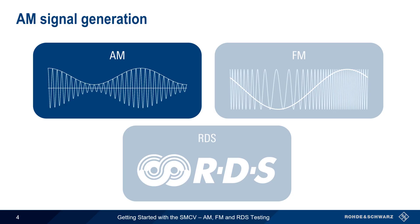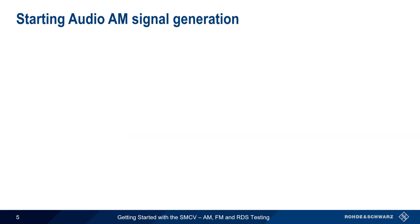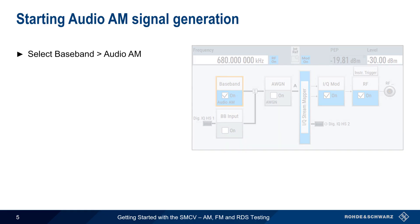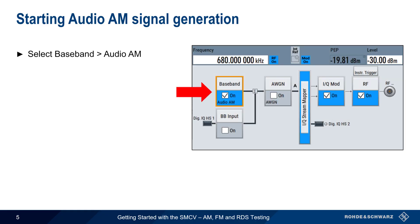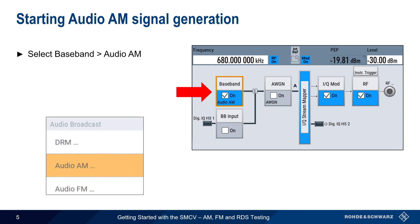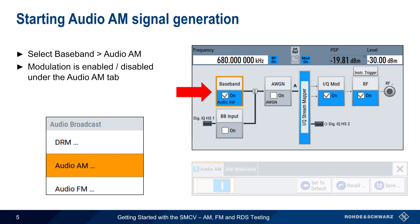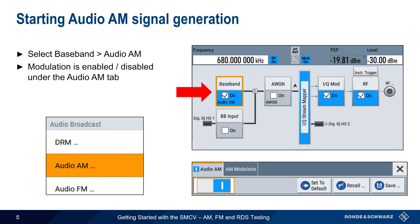The first of the three sections of this presentation covers analog AM signal generation. The first step is to go to the Baseband block in the SMCV's user interface and select Audio AM from the list of available modulation types. Clicking on this block will bring up the Audio AM dialog, and a simple toggle switch is then used to enable or disable AM audio modulation.